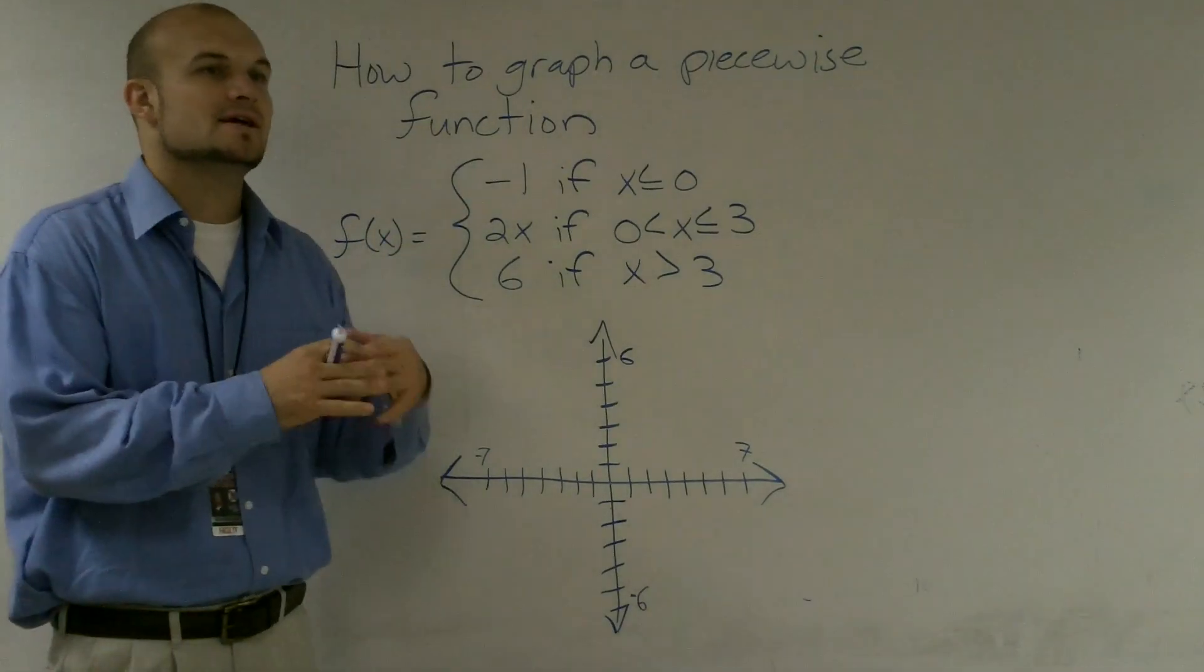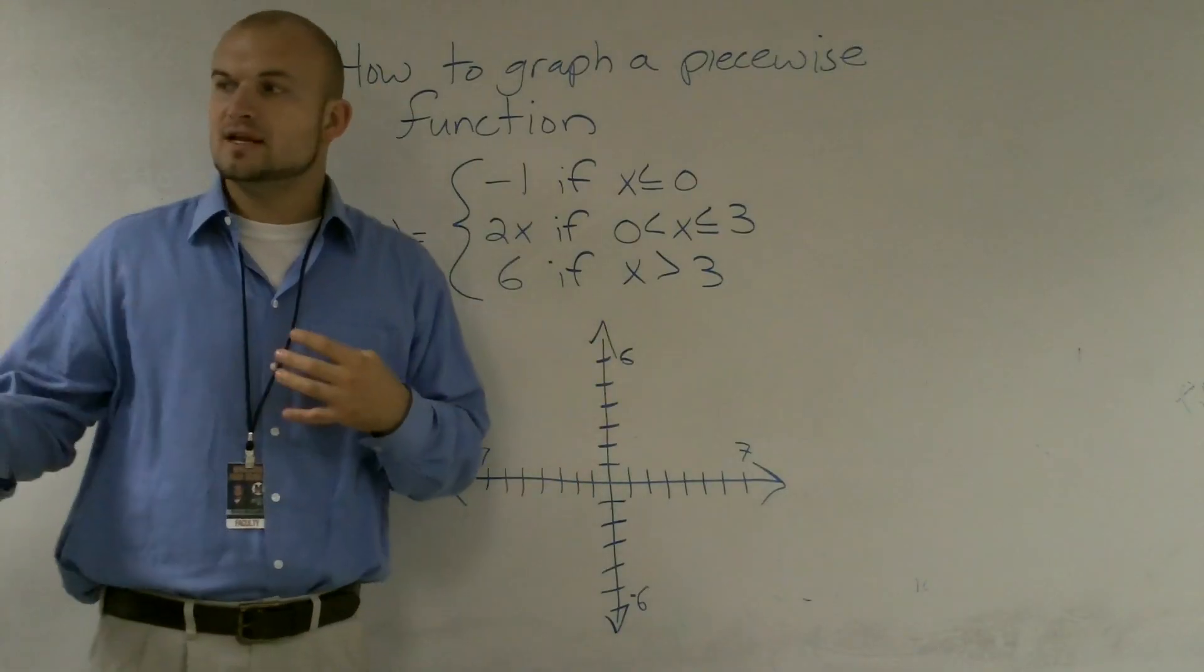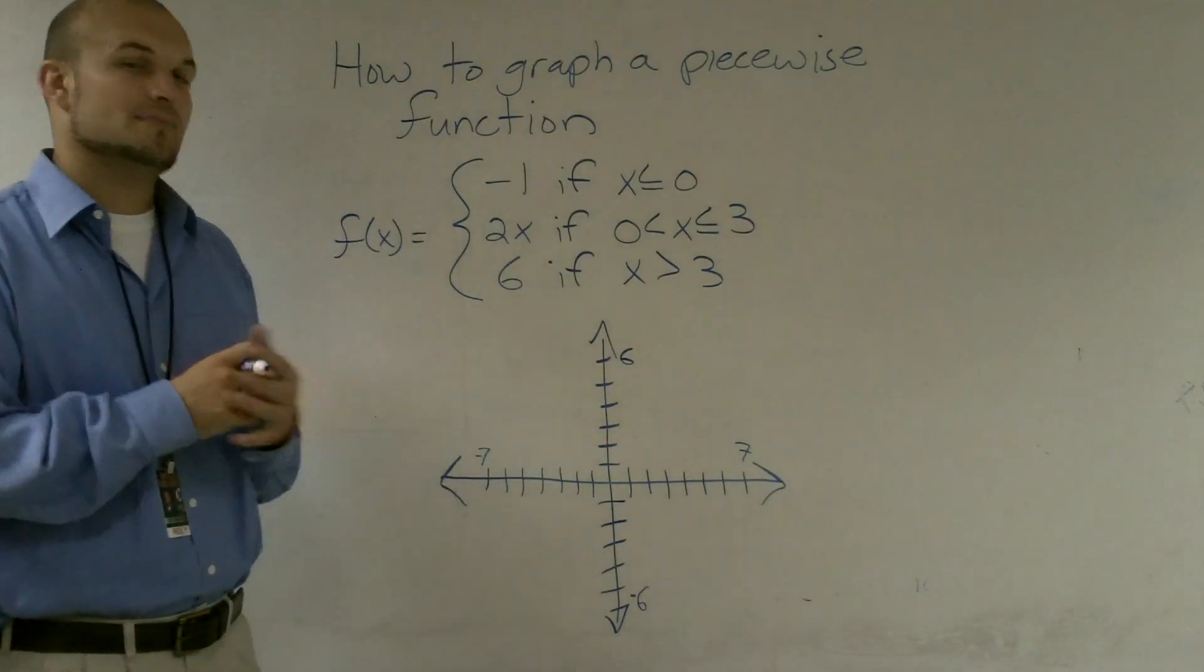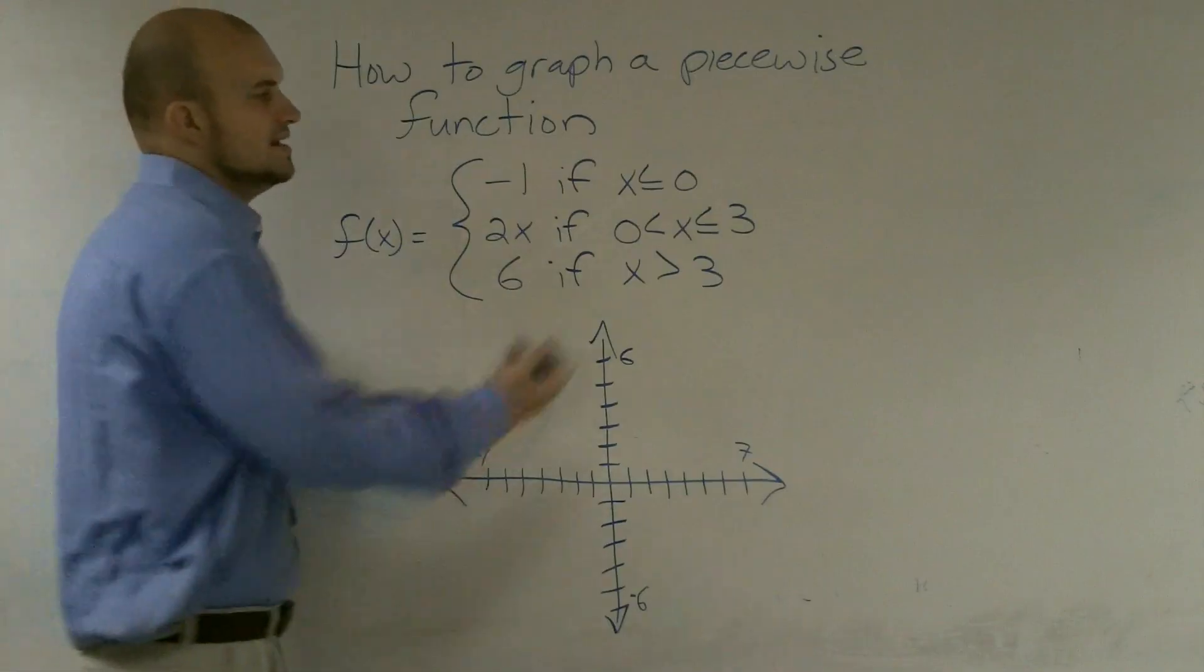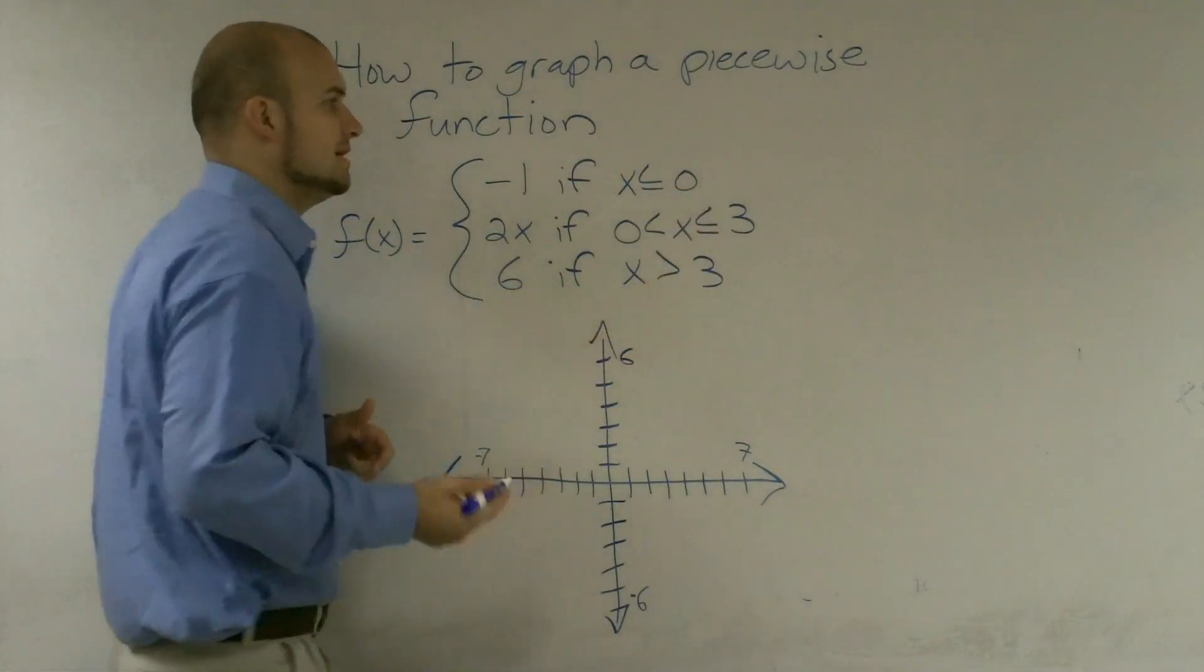Because usually when we graph linear lines, they go from negative infinity to infinity, for both your domain and your range. But now what we've done with piecewise functions is we've made constraints on our lines.